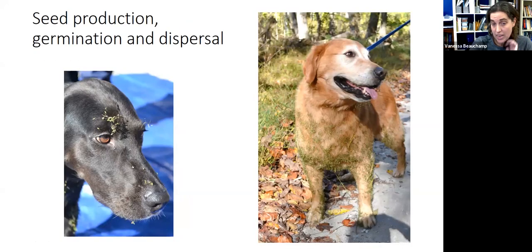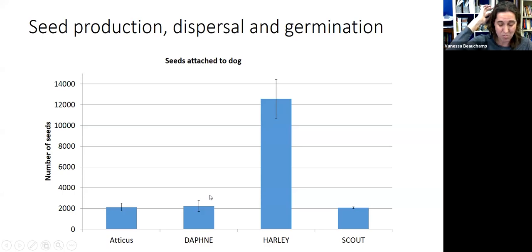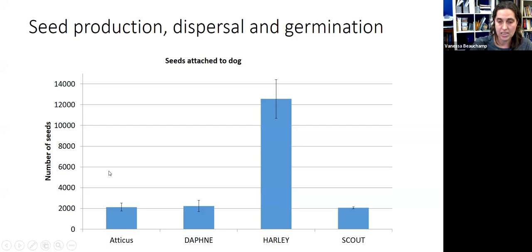We wanted to understand how people's pets might pick up and spread seed. We ran dogs through wavy leaf patches and looked at how much seed came out of their fur. A golden retriever picked up 12,000 seeds just running through 50 meters of wavy leaf. My black lab Daphne, with a fairly smooth coat, picked up 2,000 seeds. So pets are a gigantic disperser — people running their pets through this in the fall are likely a big factor in how this grass gets from place to place.